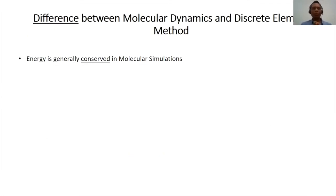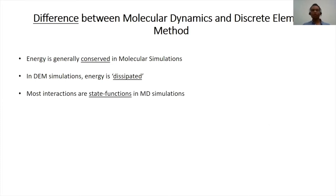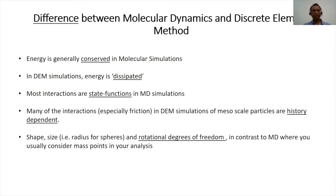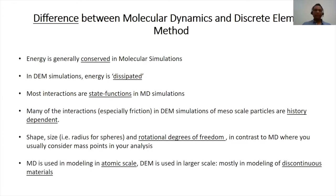In most MD simulations energy is conserved, whereas in DEM simulations energy is usually dissipated — for example, through frictional interactions. In MD, interactions are mostly governed by state functions, whereas many interactions in DEM are history-dependent. Shape, size, and rotational degrees of freedom are an additional advantage of DEM over MD, and DEM is mostly used at the mesoscale for discontinuous materials.